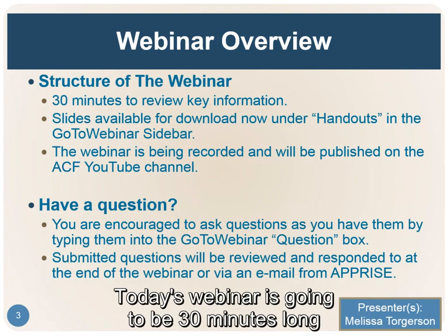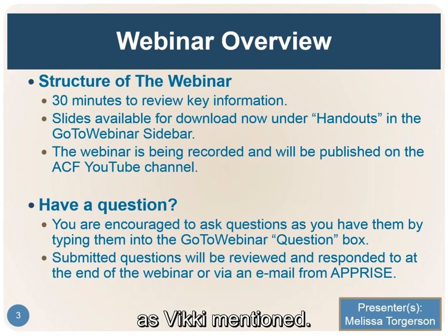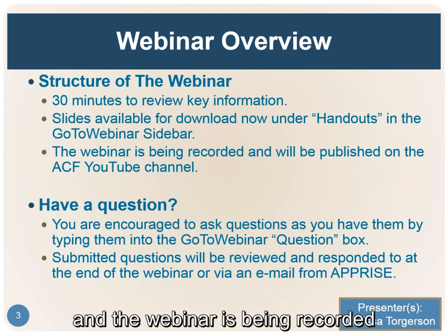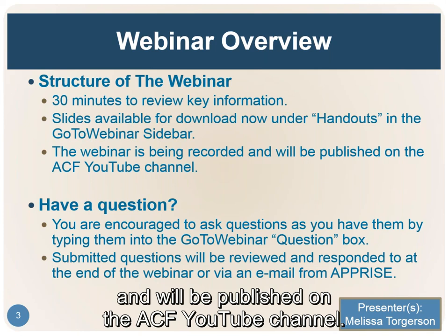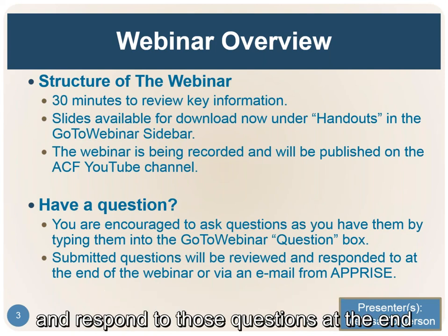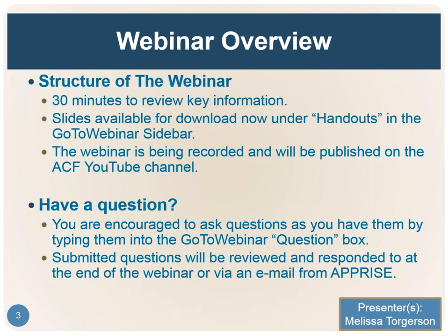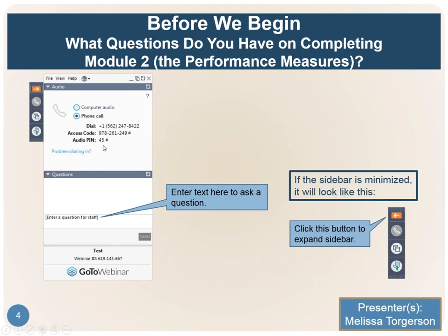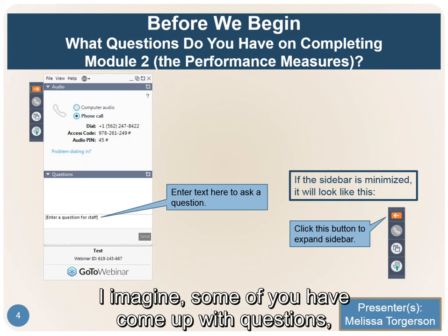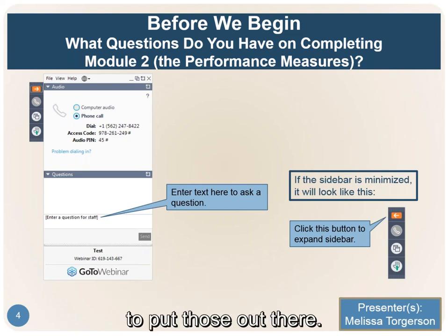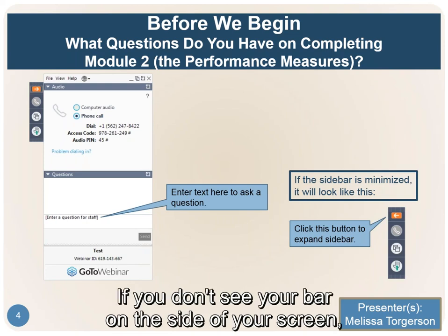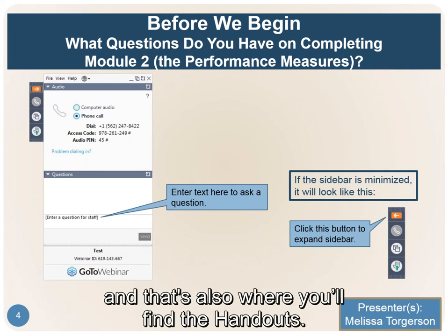Today's webinar is going to be 30 minutes long and we're going to be reviewing key information, as Vicki mentioned. The slides are available for download now under the handouts section of the navigation bar. The webinar is being recorded and will be published on the ACF YouTube channel. If you have questions today as we go along, we encourage you to type them into the GoToWebinar question box and we'll review and respond to those questions at the end of the webinar or via direct email from APPRISE. That's also where you'll find the handout.